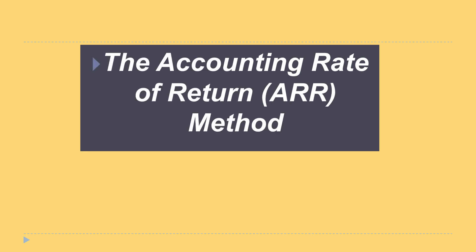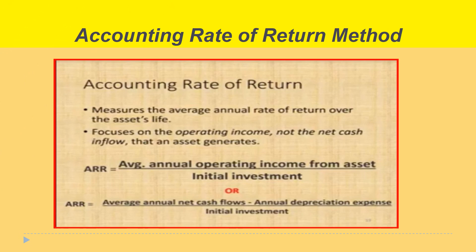The accounting rate of return, or ARR, is a method of capital budgeting. It measures the average annual rate of return over the asset's life. It focuses on operating income, not the net cash inflow that an asset generates. So the ARR is the average annual operating income from the asset divided by the initial investment.